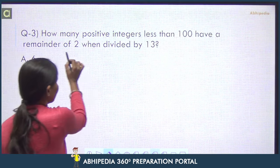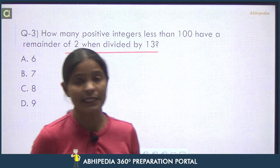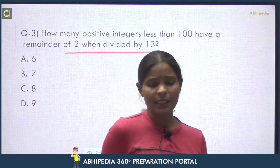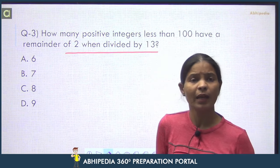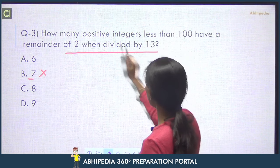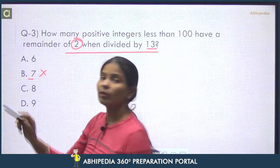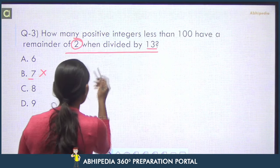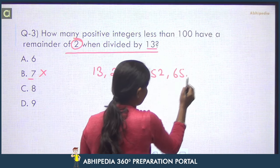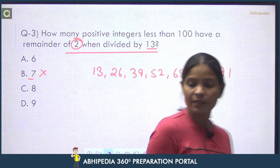Next question: How many positive integers less than 100 have a remainder of 2 when divided by 13? First check how many numbers are divisible by 13. If I divide 100 by 13, I get 7 with remainder 9. That means there are 7 numbers divisible by 13.